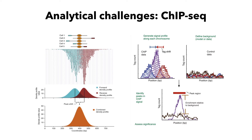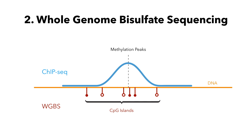ChIP sequencing is most often performed with single-end reads, and ChIP fragments are sequenced from their five prime ends only. This creates two distinct peaks, one in each strand, with the binding site falling in the middle of these peaks. The distance from the middle of the peaks to the binding site is often referred to as the shift. ChIP-seq can be used to study histone modifications and the regions that are affected by histone methylation or acetylation.